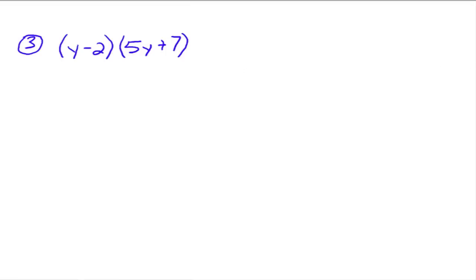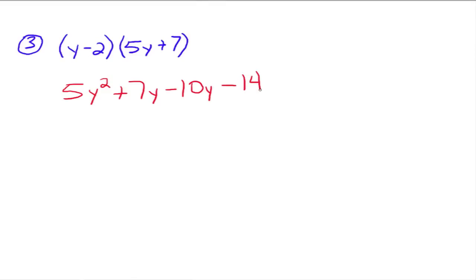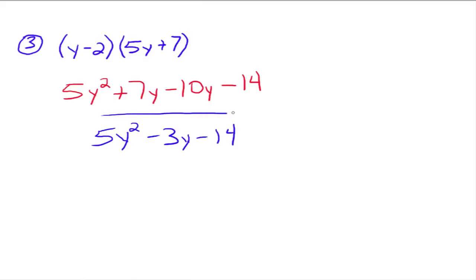We've got this y here that we can distribute through to the (5y plus 2). So y times 5y would be 5y squared, and then y times 7 would be 7y. Now we need to go back and distribute this negative 2 through: negative 2 times 5y is negative 10y, and then negative 2 times positive 7 is negative 14. We combine like terms and get 5y squared minus 3y minus 14. That is the resultant polynomial. We're using the distributive property twice.